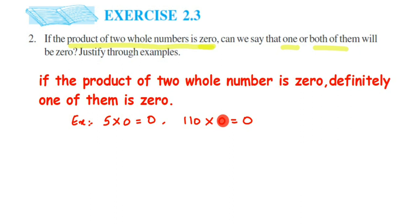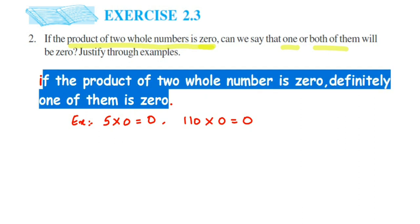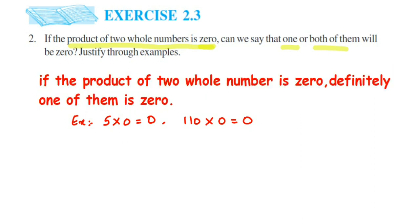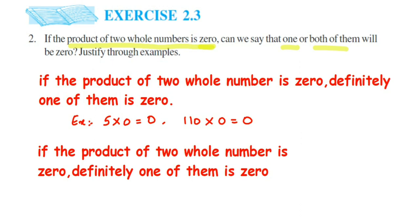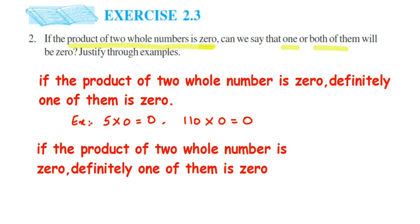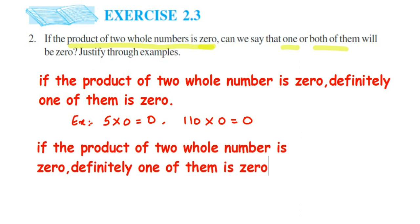Now for the next statement — if both the numbers are zero. Let me copy and modify the statement. The second statement: if the product of two whole numbers is zero, then both of them may be zero.